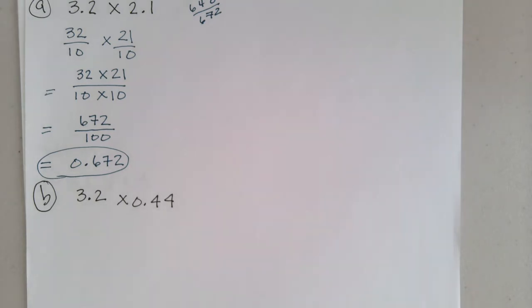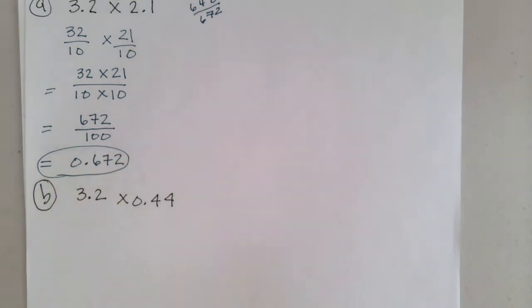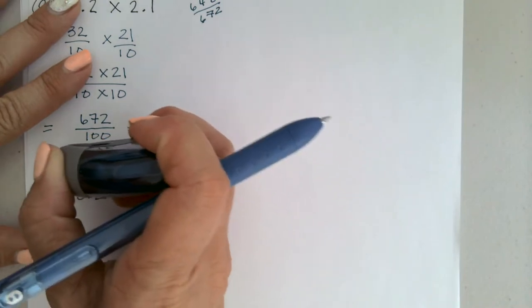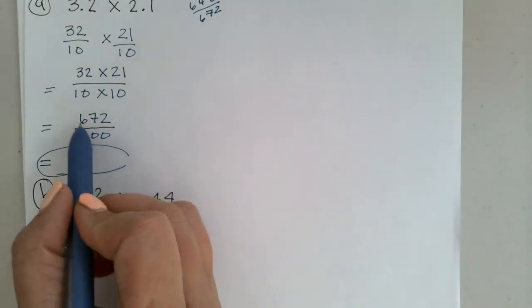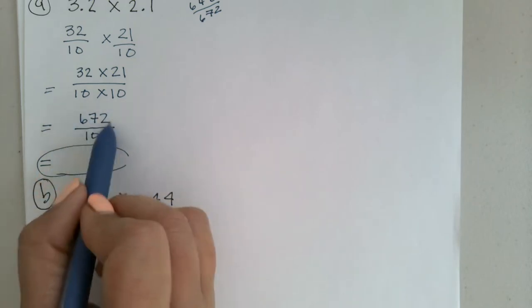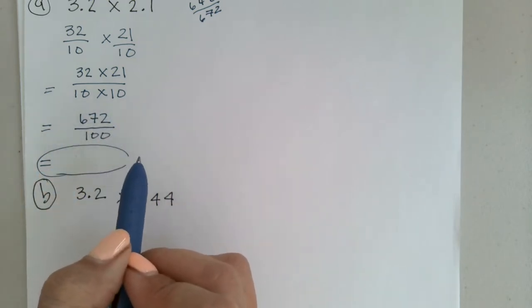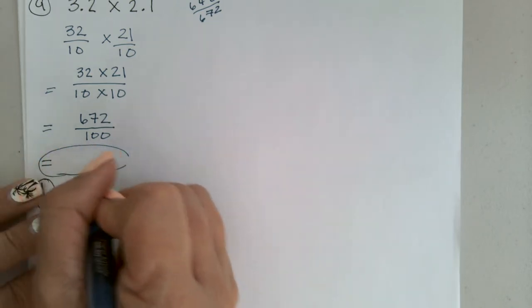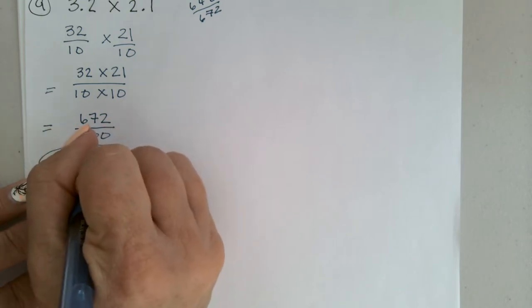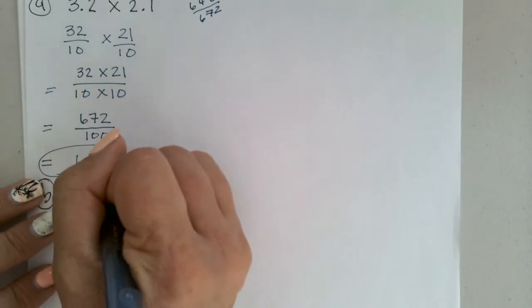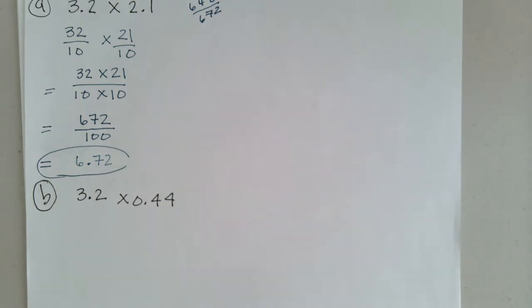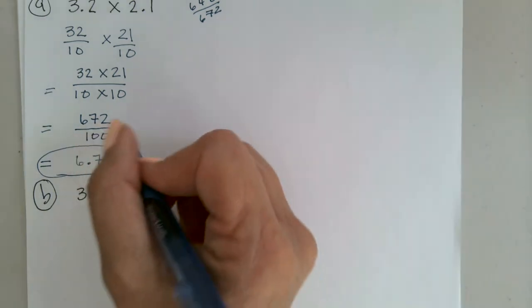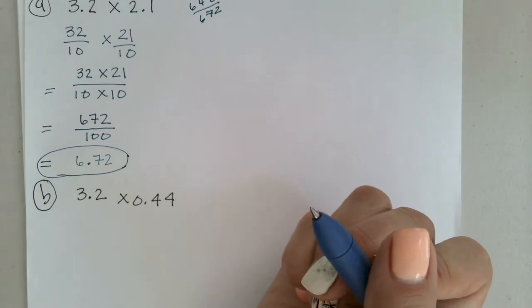Wait — 672 hundredths. Actually, let me correct myself. This is thousands here — I thought I was dealing with the 1s place, but it can't be all behind the decimal. It has to be 6 and 72 hundredths because the 2 has to be in the hundredths place. Glad I fixed that. Does the answer make sense given what we estimated? Yes — we said it was going to be a little more than 6.